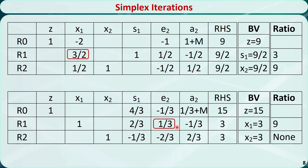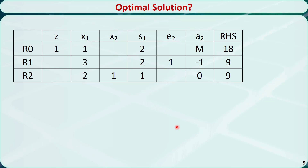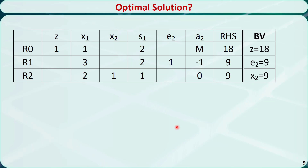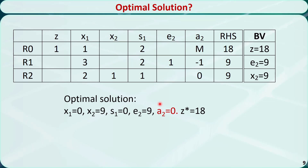We need to change the pivot element to 1 and make it disappear from other rows using elementary row operations. This is the updated tableau. x2 and e2 are basic variables and others are non-basic variables. Setting non-basic variables to 0: e2 is equal to 9, x2 is equal to 9, and z is equal to 18. Now the coefficients of all non-basic variables are positive, so this tableau is optimal. The optimal solution is x1 = 0, x2 = 9, e2 = 9, a2 = 0, and z* = 18. Because the artificial variable a2 is equal to 0, this is the true optimal solution. This solution is the same as the one we got using the graphic method.